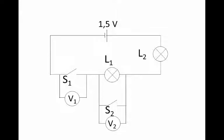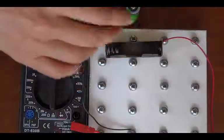So now we need to build the circuit and take our measurements. We need a 1.5 volt cell, and we're going to use a cell holder.